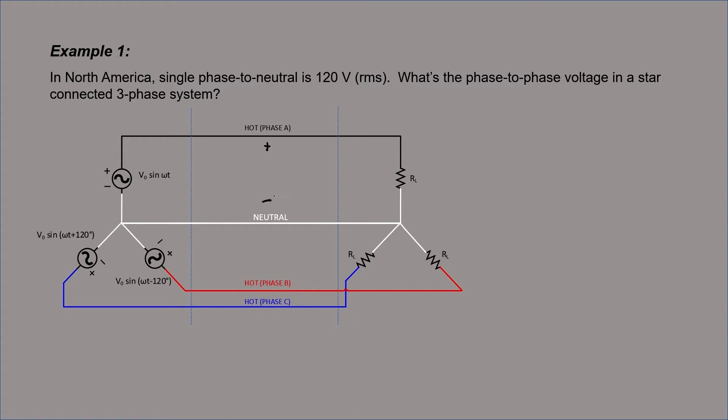What this problem tells us is that the voltage between any of the three phases and neutral is 120 volts. That's true for phase A, phase B, and phase C. The neutral lines are typically connected to Earth, so we could call that zero volts. All three of these voltages are the same in the sense that they have the same RMS voltage. They're all 120 volts, but they're not the same voltage because they're out of phase with one another.